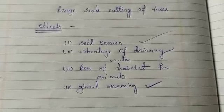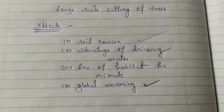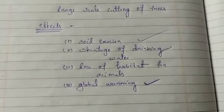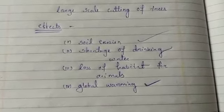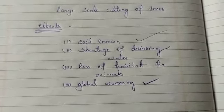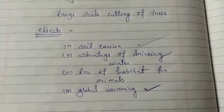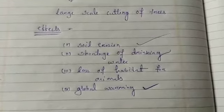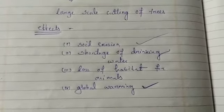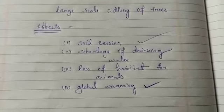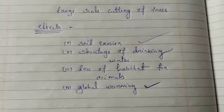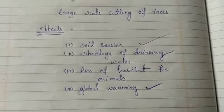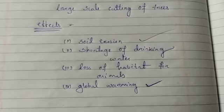When we are cutting down trees, a higher percentage of carbon dioxide is released into the atmosphere, which leads to global warming and increases the earth's temperature. Global warming means when there is a high percentage of carbon dioxide in the atmosphere.